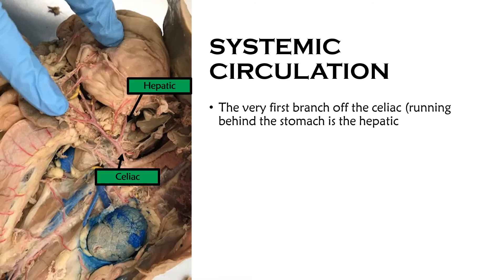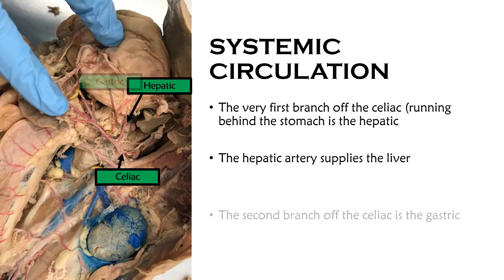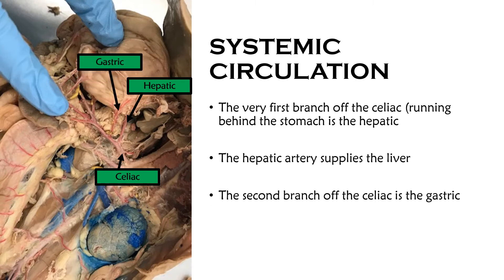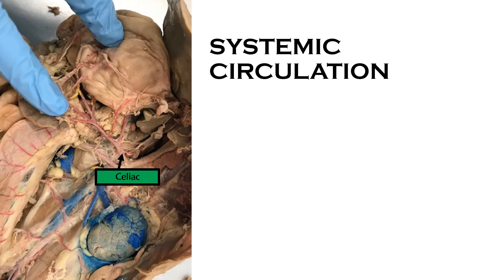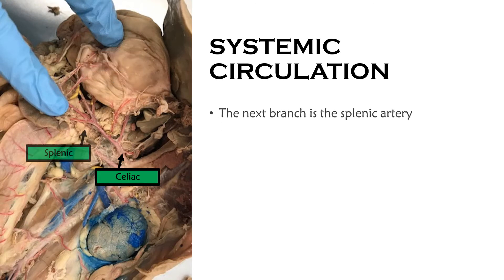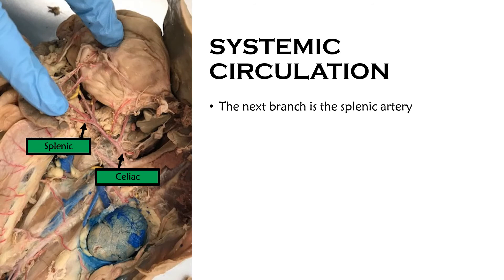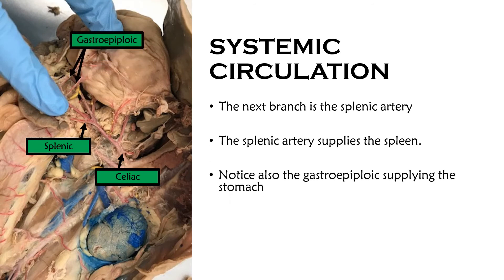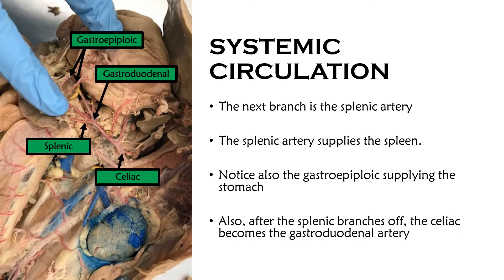The first branch off the celiac, running behind the stomach, is the hepatic artery, supplying the liver. The second branch is the gastric artery, supplying the stomach. The third branch is the splenic artery, which supplies the spleen. Also notice the gastroepiploic arteries supplying the stomach. After the splenic artery branches off, the celiac becomes the gastroduodenal artery.